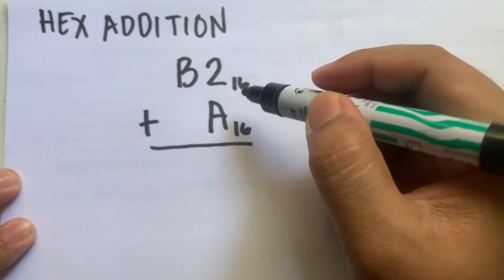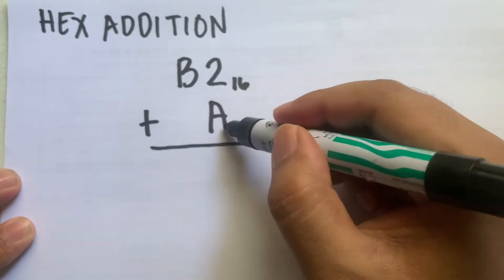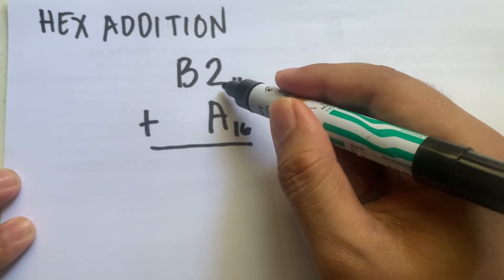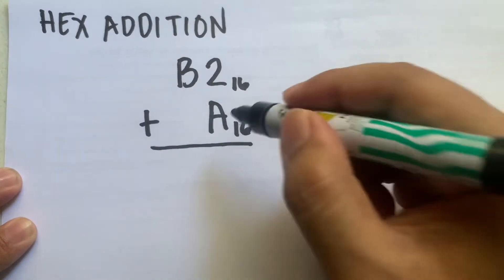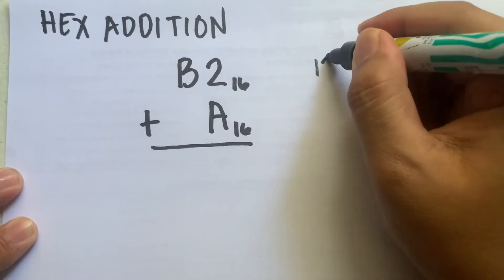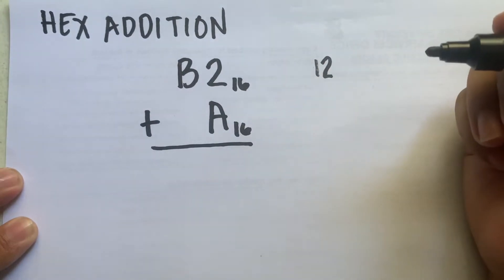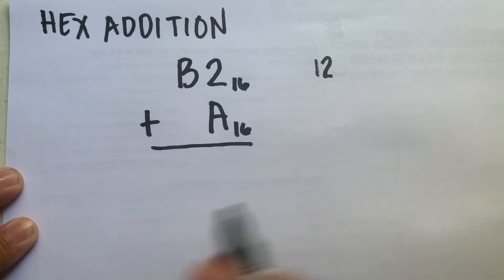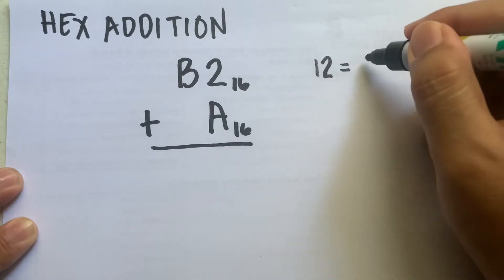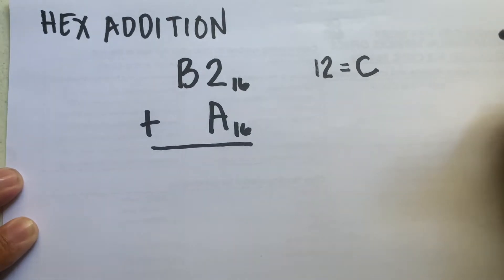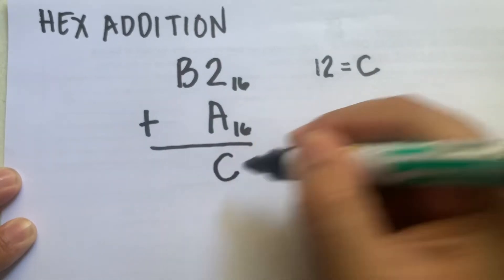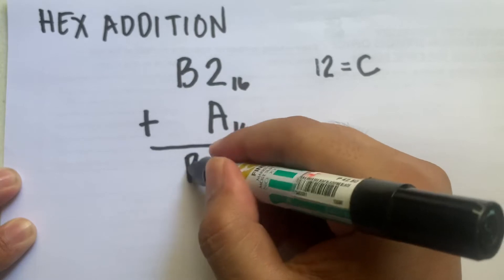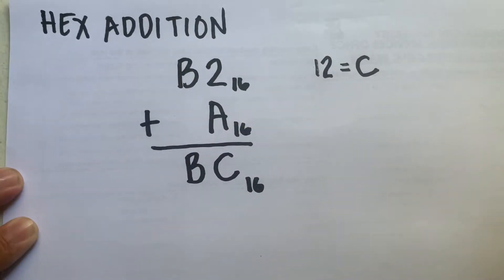We start operating on the last digits of the given numbers. We have 2 plus A. We know that A is 10, so A plus 2 is 10 plus 2, which is 12. Now 12 is still a valid hexadecimal number because it is between 0 and 15, but 12 is represented by the letter C. So we put the letter C here, then bring down B, giving us the answer BC.